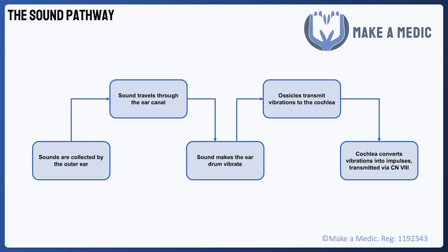This diagram summarises the normal hearing pathway through all of these structures. Sounds are collected by the outer ear, and these waves travel through the air in the ear canal before making the eardrum vibrate. These vibrations are transmitted and amplified by the tiny ossicle bones. Finally, the hair cells in the cochlea convert these vibrations into electrical impulses, which are transmitted to the brain via the cochlear and vestibulocochlear nerves.